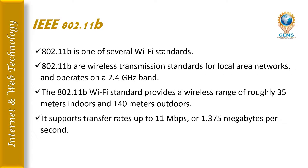IEEE 802.11b is one of several Wi-Fi standards — a wireless transmission standard for local area networks. It operates on the 2.4 GHz band. The 802.11b Wi-Fi standard provides a wireless range of roughly 35 meters indoors and 140 meters outdoors, and supports transfer speeds up to 11 Mbps (1.375 MB per second).